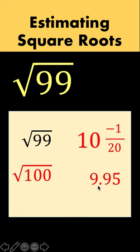And compare that with the calculator value of square root of 99, which is approximately 9.9498. And notice that these two values are very close with each other.